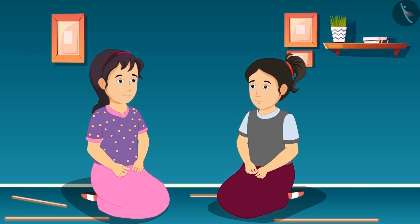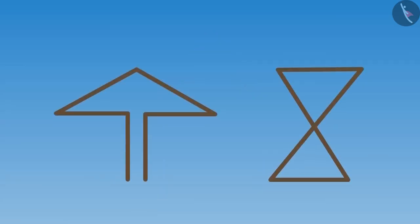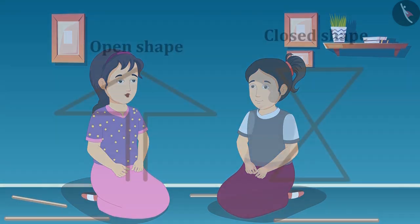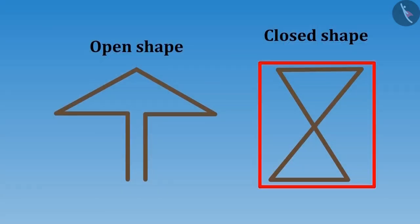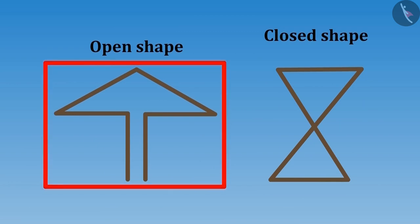Today Meena and Riva are making different shapes with the help of wooden sticks. They have made this shape by joining 5 sticks and they have made these 2 shapes with 6 sticks. Riva, do you know that this shape made out of 6 sticks is a closed shape and this is an open shape?